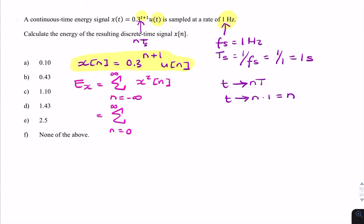Instead of x squared, I'm going to write 0.3 to the power n plus 1 squared. And instead of the unit step, we can just write 1, or not write anything.